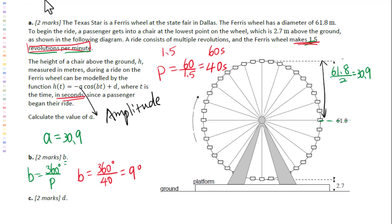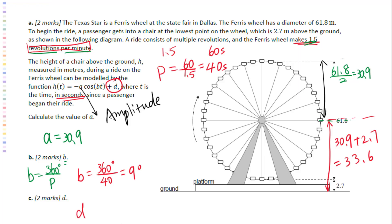Find the value of d. D is the distance from the midline to the ground. That is 30.9 plus 2.7 equals 33.6. So d equals 33.6 meters.